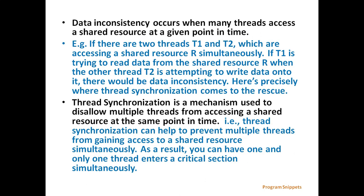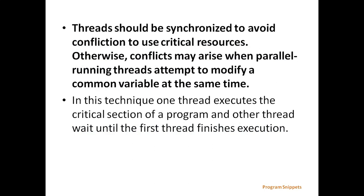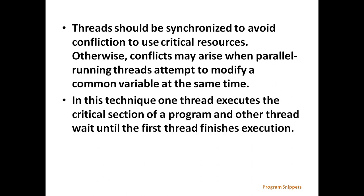Thread synchronization is a mechanism that is used to disallow multiple threads from accessing a shared resource at the same point. That is, thread synchronization can help to prevent multiple threads from gaining access to the shared resource simultaneously. As a result, you can have one and only one thread enter a critical section simultaneously. Threads should be synchronized to avoid conflicting use of critical resources. Otherwise, this conflict may arise when parallel running threads attempt to modify a common variable at the same time. In this technique, one thread executes the critical section of a program and other threads wait until the first thread finishes execution.